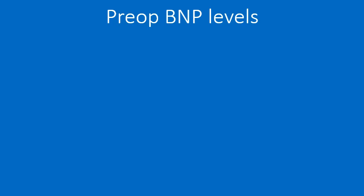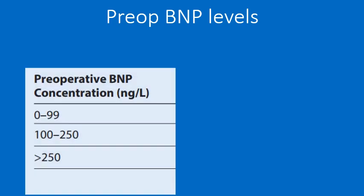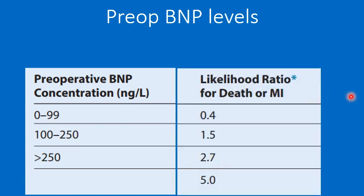Preoperative BNP (brain natriuretic peptide) levels are increased in patients with cardiac failure. If BNP is less than 99 nanograms per liter, the perioperative risk of MI or death is 0.4%. When the value is 100 to 250 nanograms per liter, the risk is 1.5%. If BNP is more than 250 nanograms per liter, the likelihood ratio for death or MI may go up to 5%.